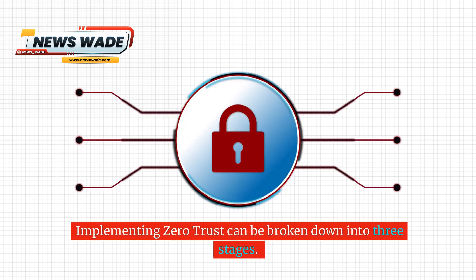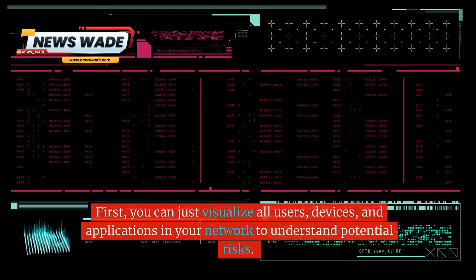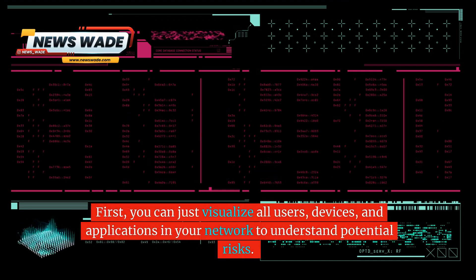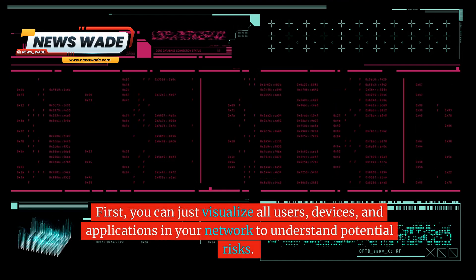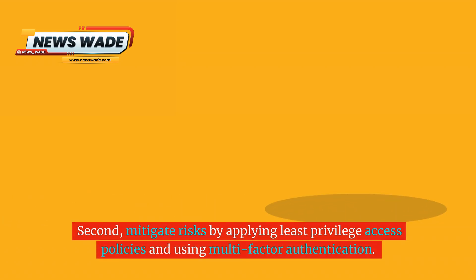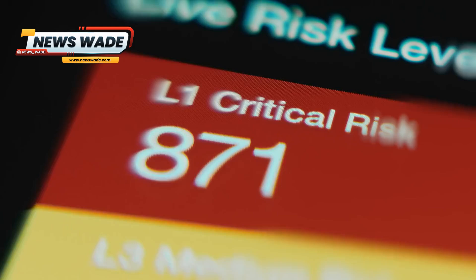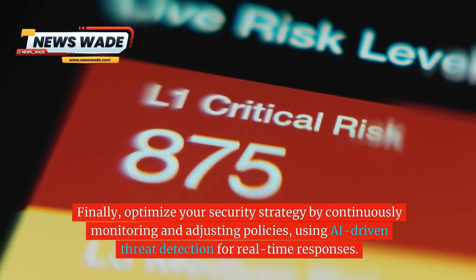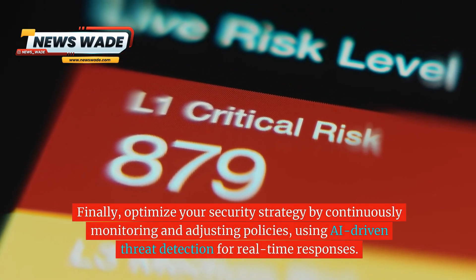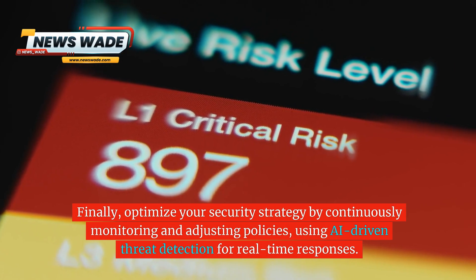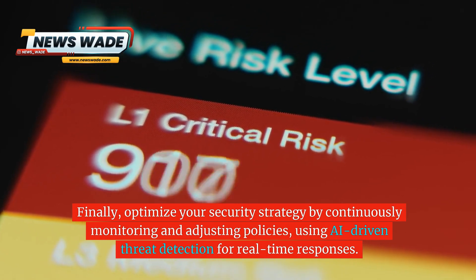Implementing Zero Trust can be broken down into three stages. First, visualize all users, devices, and applications in your network to understand potential risks. Second, mitigate risks by applying least privilege access policies and using multi-factor authentication. Finally, optimize your security strategy by continuously monitoring and adjusting policies, using AI-driven threat detection for real-time responses.